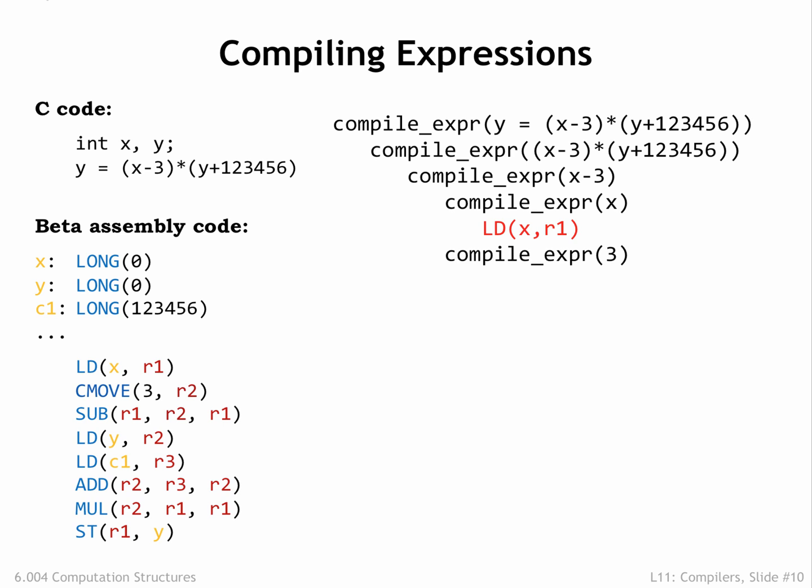Now we need to get the value of the right-hand operand of the subtract into a register. In this case, it's a small constant, so we generate a CMOVE instruction. Now that both operand values are in registers, we return to the subtract template and generate a subtract instruction to do the subtraction.